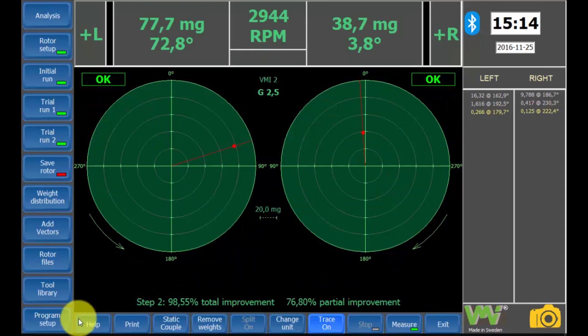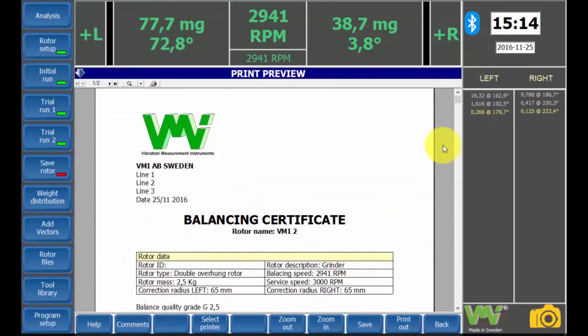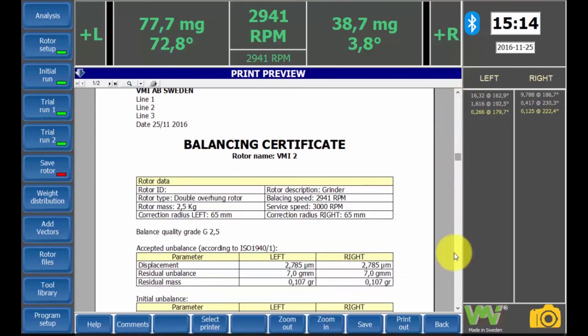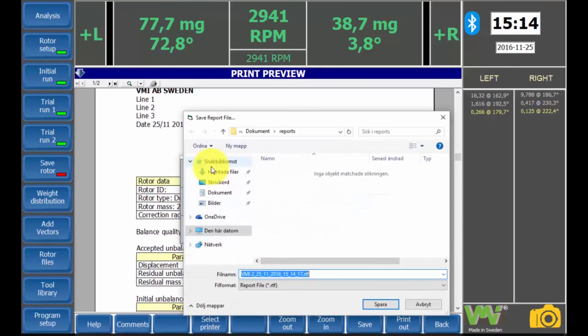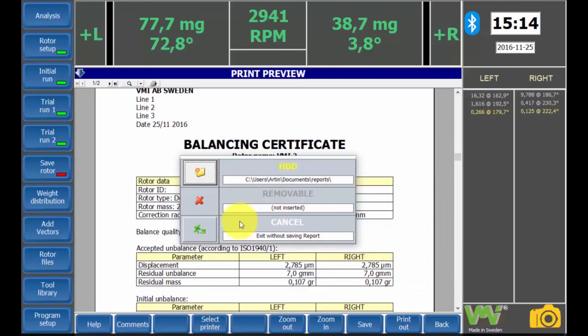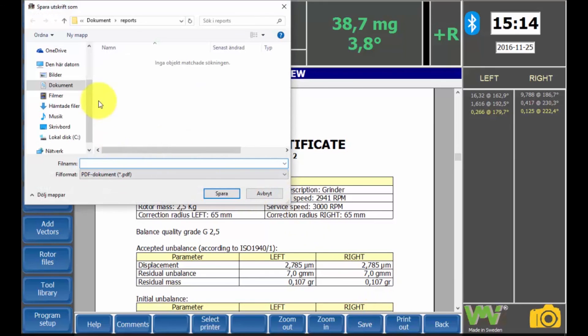If the print button is pressed, you can choose to print a balancing report if the piece is connected to a printer, or create a PDF file to save on the hard drive. Click the folder to decide which directory it will be saved to. If the print out button is clicked, the certificate is saved as a PDF file and will be printed.